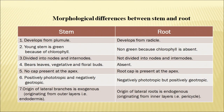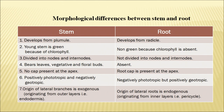Now let us distinguish between stem and root. Stems develop from the plumule and roots from the radicle. Young stem is green because of chlorophyll, while roots are non-green as no chlorophyll is present in root cells. The stem is divided into nodes and internodes, while the root is not. The stem bears leaves, vegetative and floral buds, while the root does not bear such structures. The root has a root cap for protection as it grows through soil particles, but the stem needs no such cap.